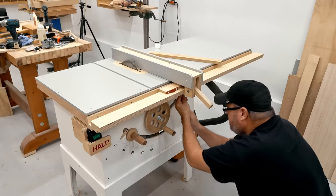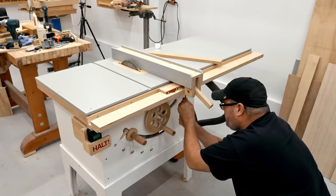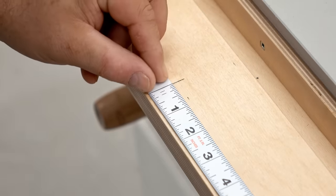Next I can get the fence rail put on, driving the screws from underneath, and the last thing to do is to put on the peel and stick measuring tape.